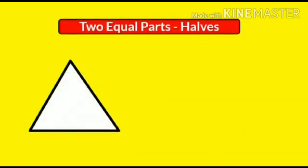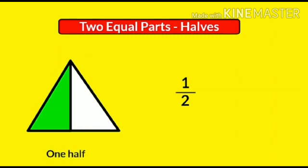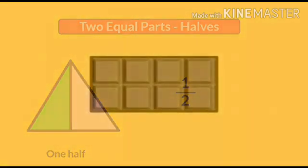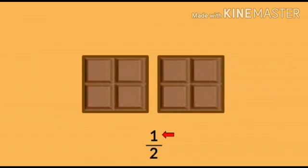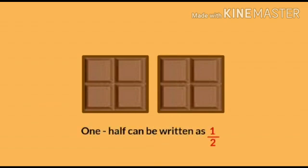Now, we are going to learn about two equal parts, or halves. When something is divided into two equal parts, we call them halves. One piece out of two total pieces is one half. For example, suppose you have a chocolate. If you want to divide it into two equal parts, you cut it in half. Thus, one half of something means one part of two equal parts of that thing. Here, one is the numerator and two is the denominator — that is the number of total pieces of this chocolate. One half can be written as one by two.